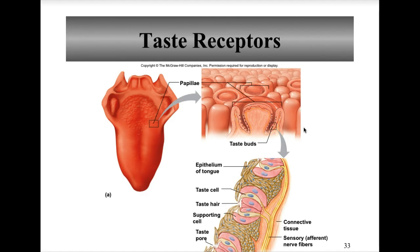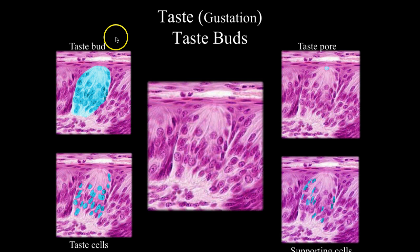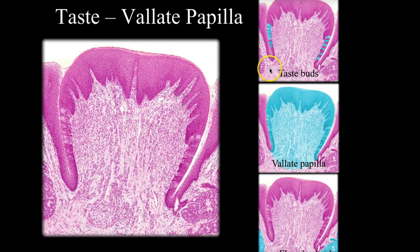Looking at the tongue, you can see taste receptors and taste buds. Within the taste bud, there are taste cells, supporting cells, and a taste pore. The papilla and von Ebner's gland are also visible in the structural diagrams.